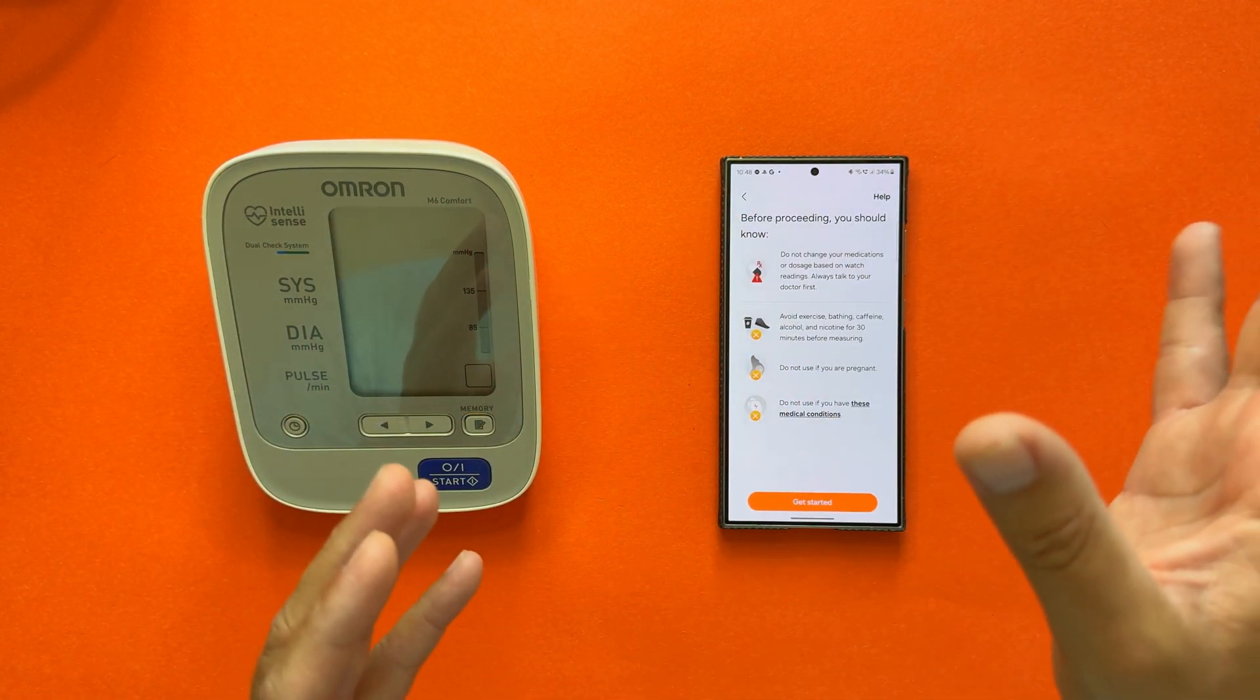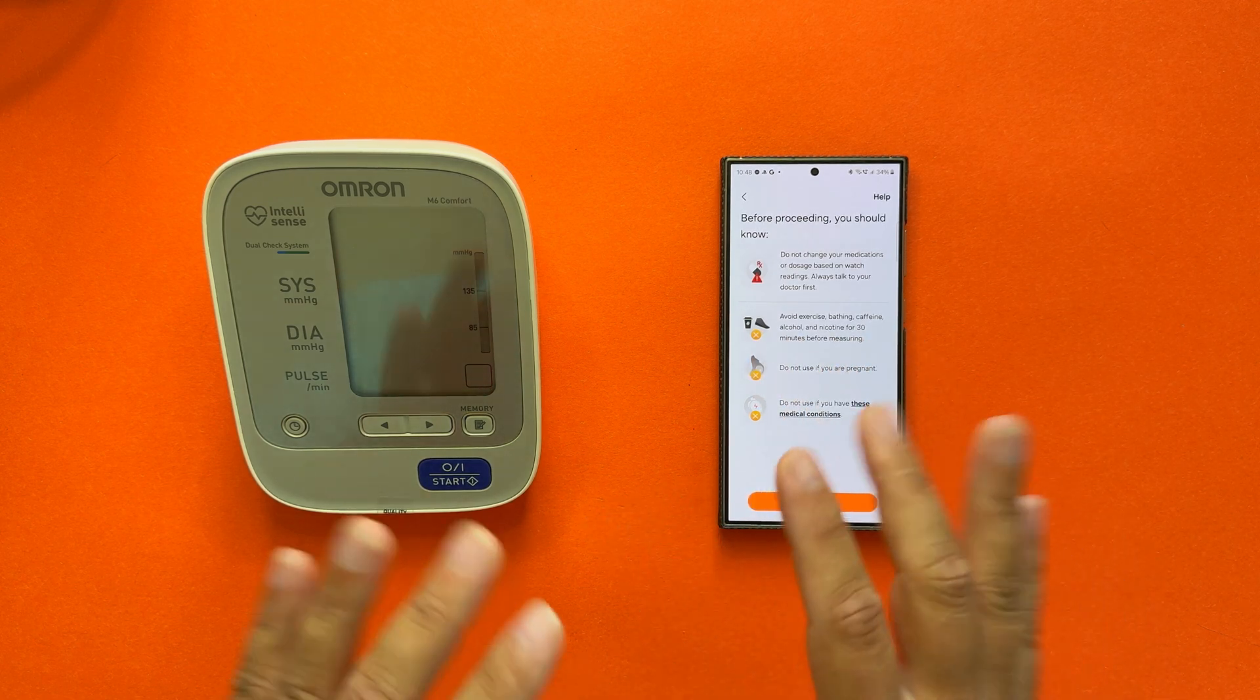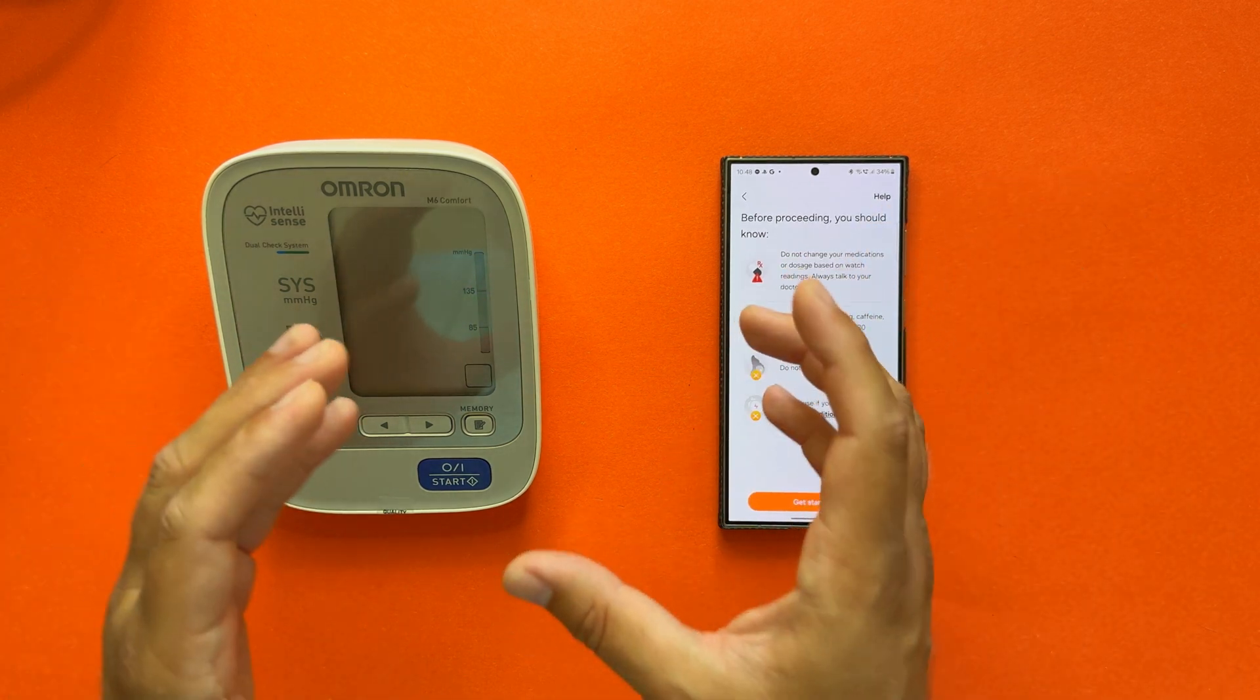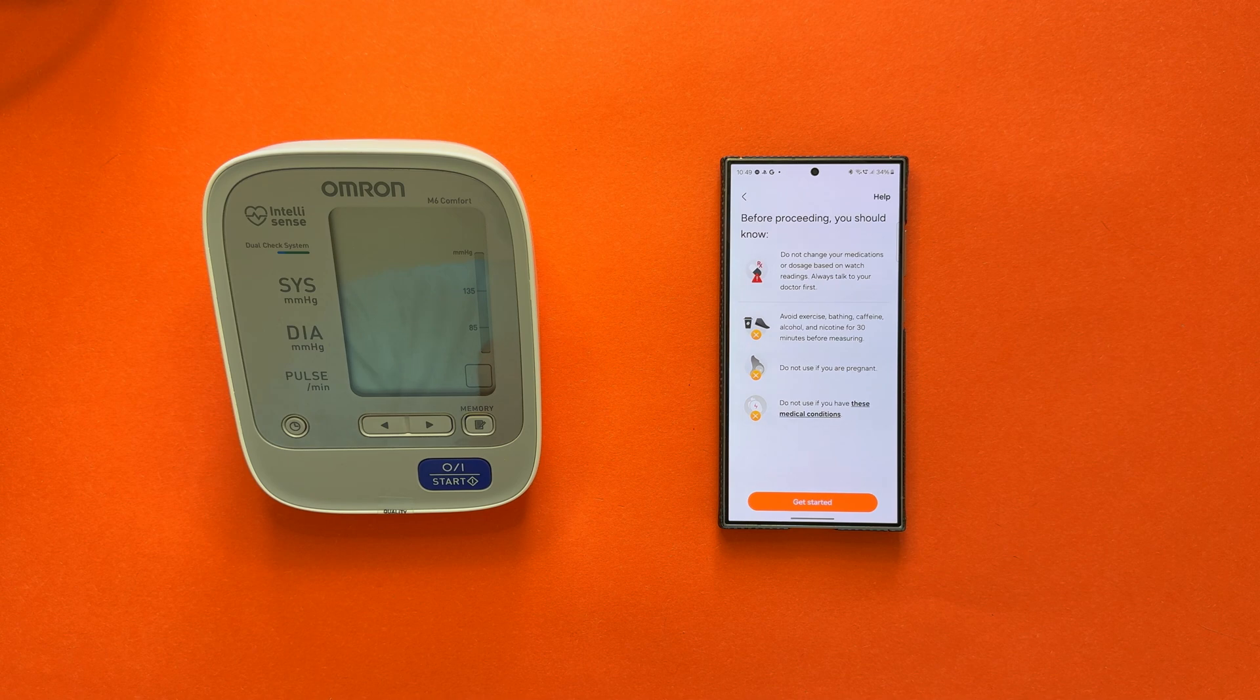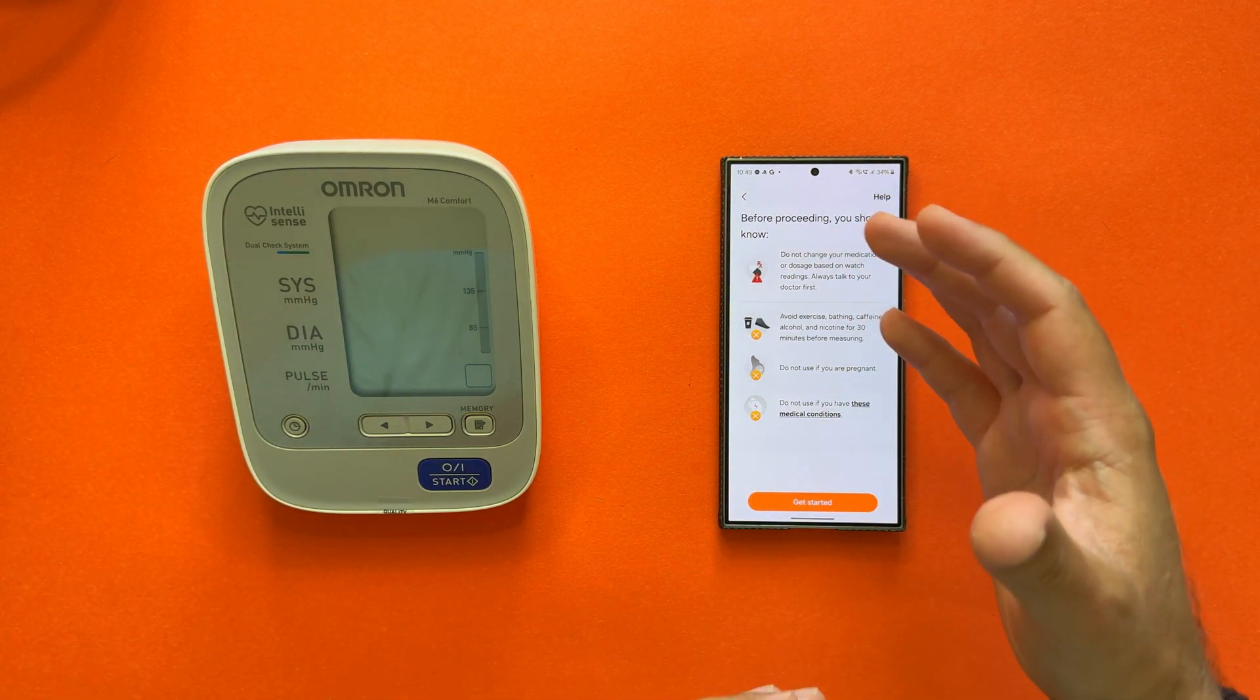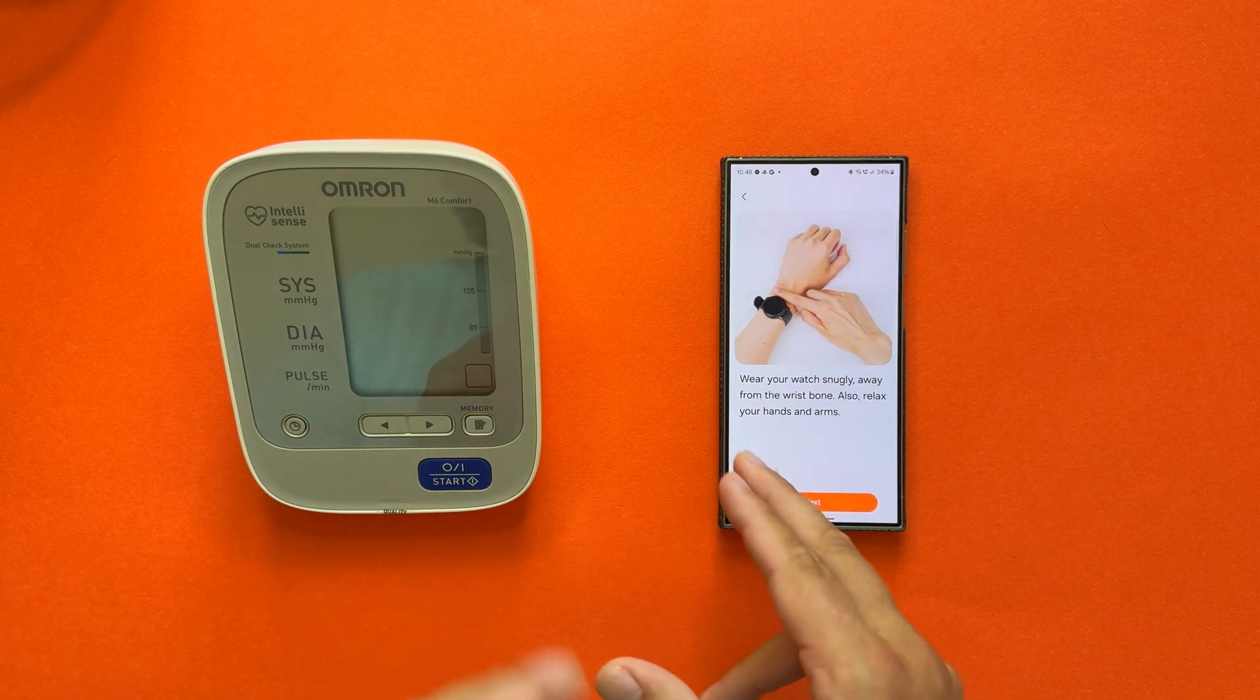Avoid exercise, bathing, caffeine, alcohol, and nicotine for 30 minutes. Now this is something that I did not do, but anyway I'm just doing this video to show you how you can calibrate your Galaxy Watch Ultra if you have this blood pressure monitor. Do not use if you're pregnant, and there are automatic conditions that are described here.